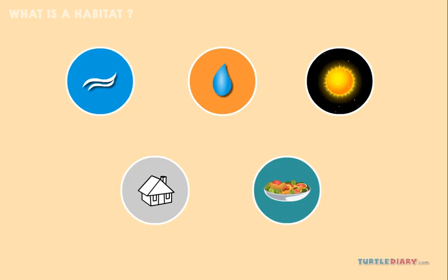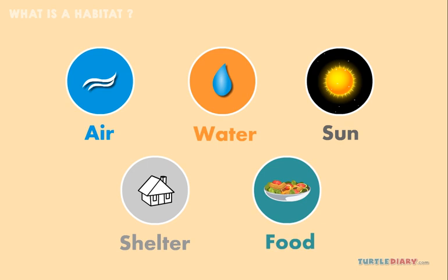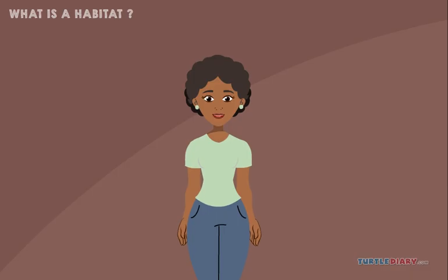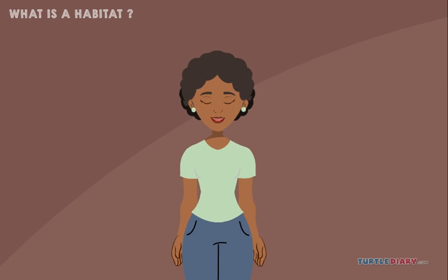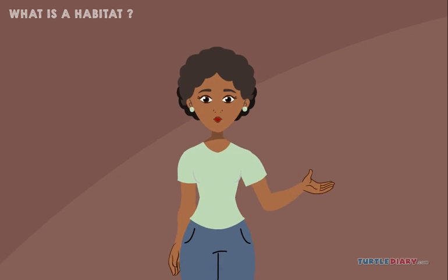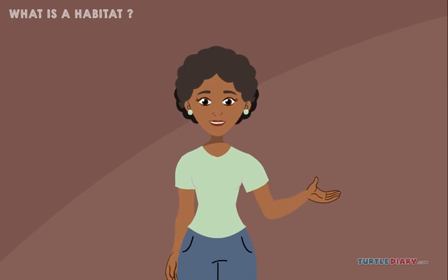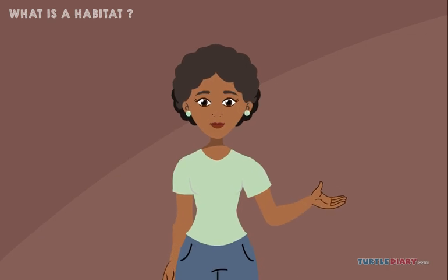All living things need air, water, sun, shelter, and food. Living things only survive if they get what they need from the environment.